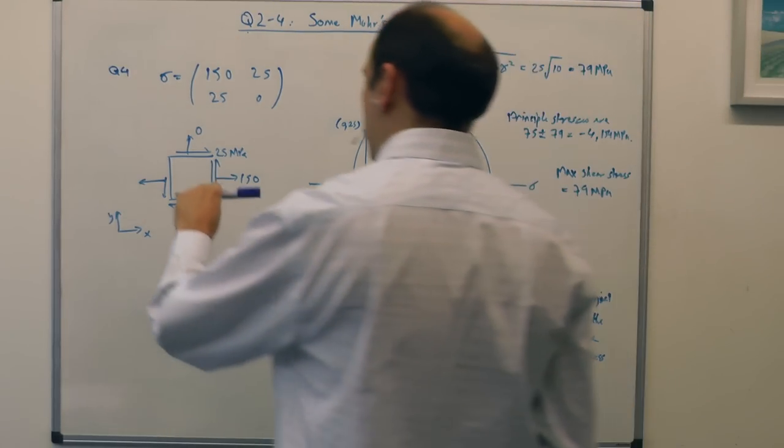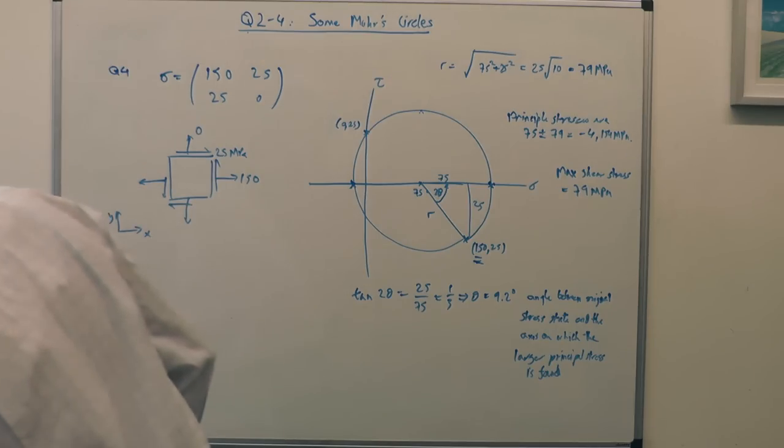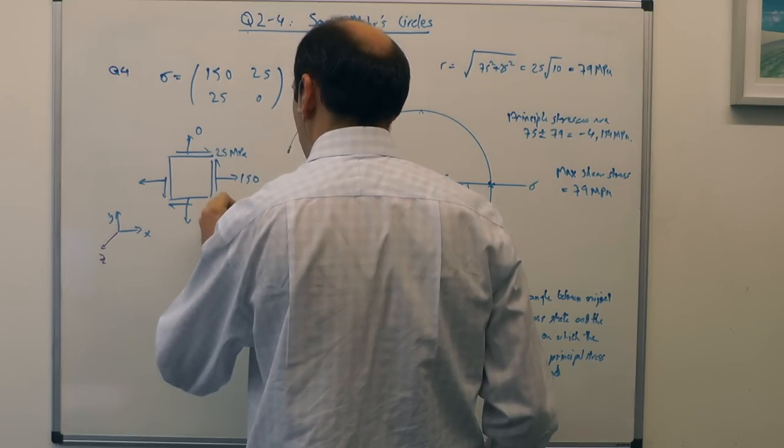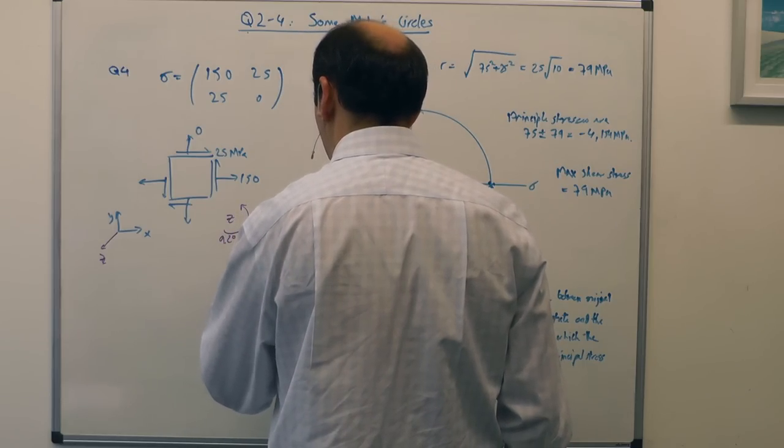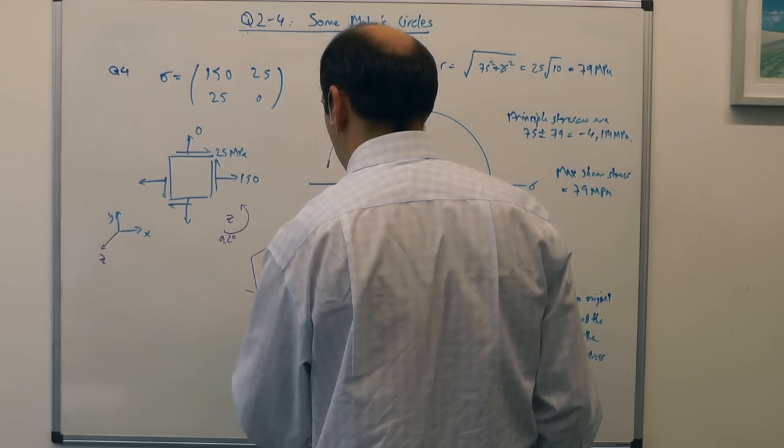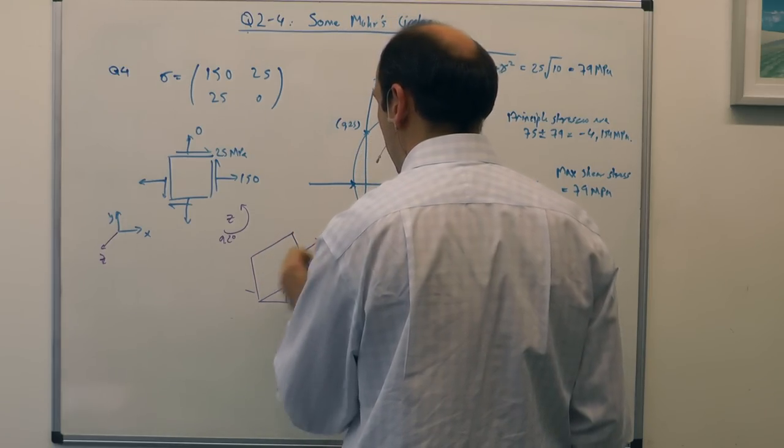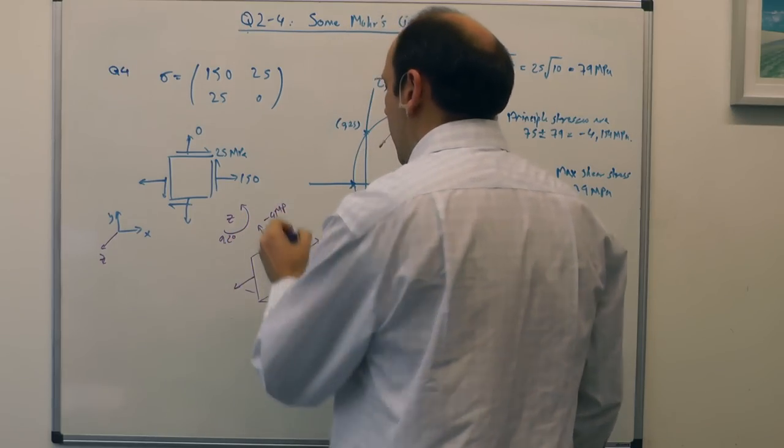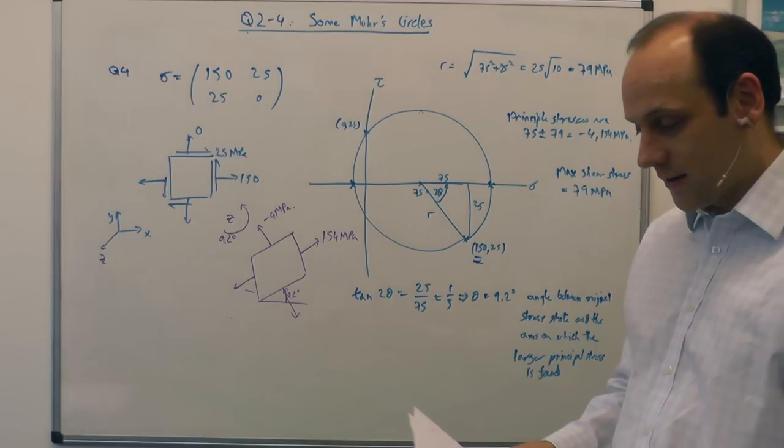So if we do a little rotation here of 9.2 degrees, so there's my z. If I do a little rotation that way, about z of 9.2 degrees, then I get a little cube, which is like that. And there's my original. So that's my 9.2. And that's the one on which I've got 154 MPa, minus 4 MPa, and no shears operating at all. So that's the way to interpret what we've done in terms of this angle. So that's question four.